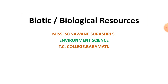Each biotic factor needs the proper amount of energy and nutrition to function day to day. There are three main categories of biotic components: firstly, producers, also called autotrophs; secondly, consumers, also known as heterotrophs; and third, decomposers, also called detritivores or reducers.